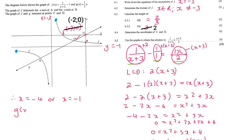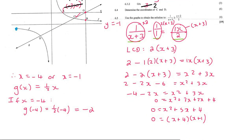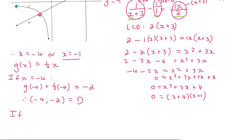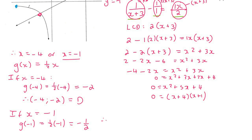I plug it into the straight line because the straight line equation is simpler. So g of negative 4 equals a half times negative 4, which gives negative 2. Therefore the coordinates of D are negative 4 and negative 2. Then to find C, plug in the other x answer: g of negative 1 equals a half times negative 1, which is negative a half. So the coordinates of C are negative 1 and negative a half.